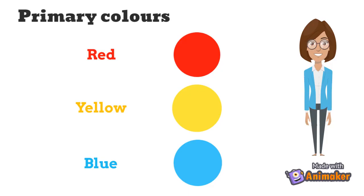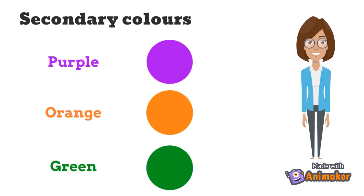First, let us talk about primary colors. There are three primary colors that are red, yellow, and blue. Now, let us talk about secondary colors. There are three secondary colors that are purple, orange, and green.